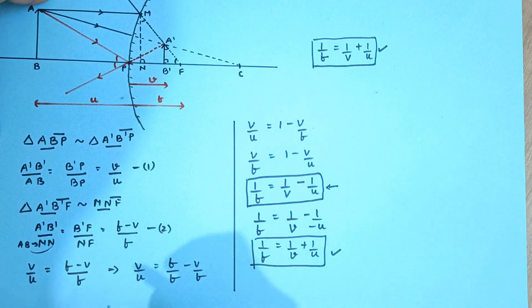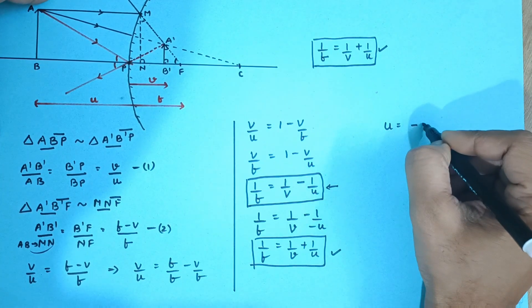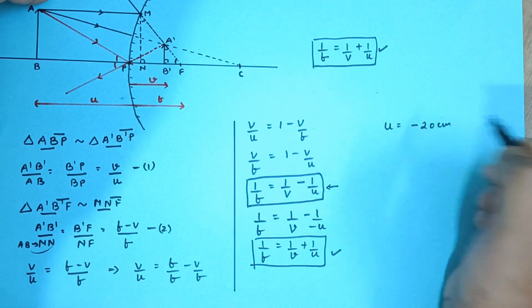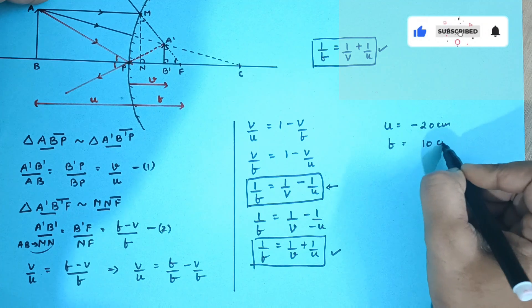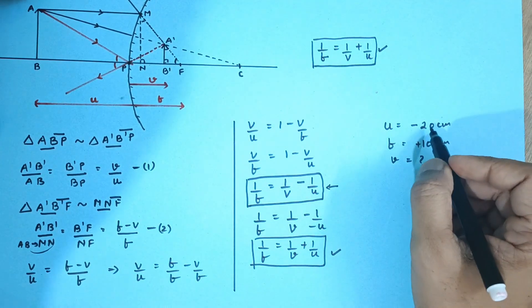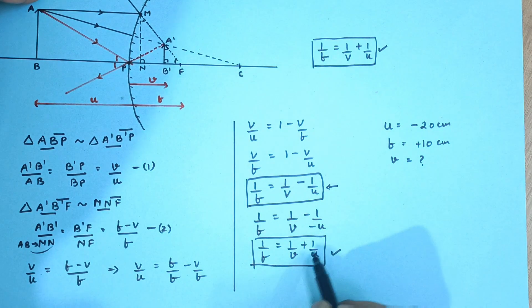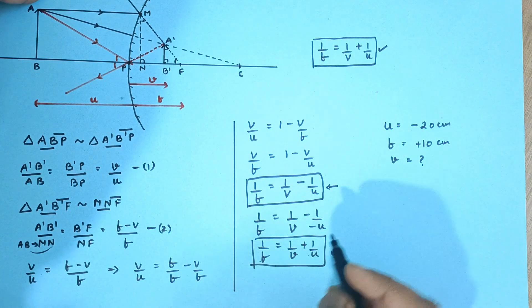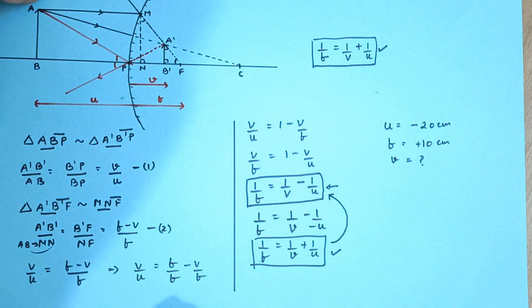Now let's solve a numerical by considering the convex mirror image distance as suppose 20 centimeters, so it is minus 20. Then focal length is say again 10 centimeters, so that would be plus 10 and I am supposed to find out V. Now when I use the sign convention second time, I will have to substitute U as minus 20 and F as plus 10. So I will revert back to my original formula.